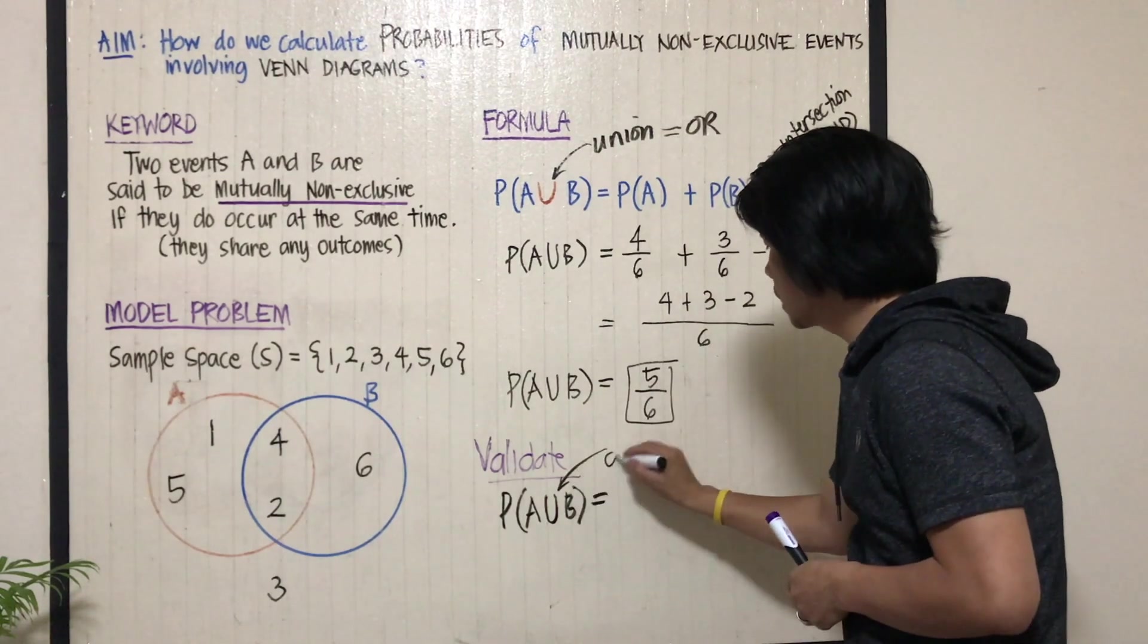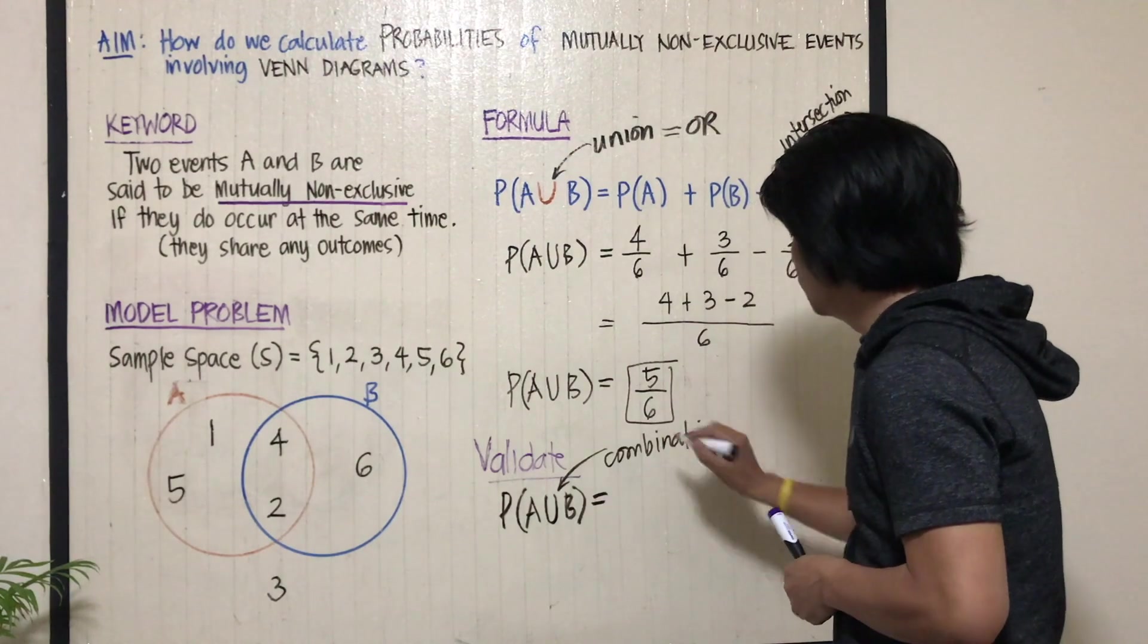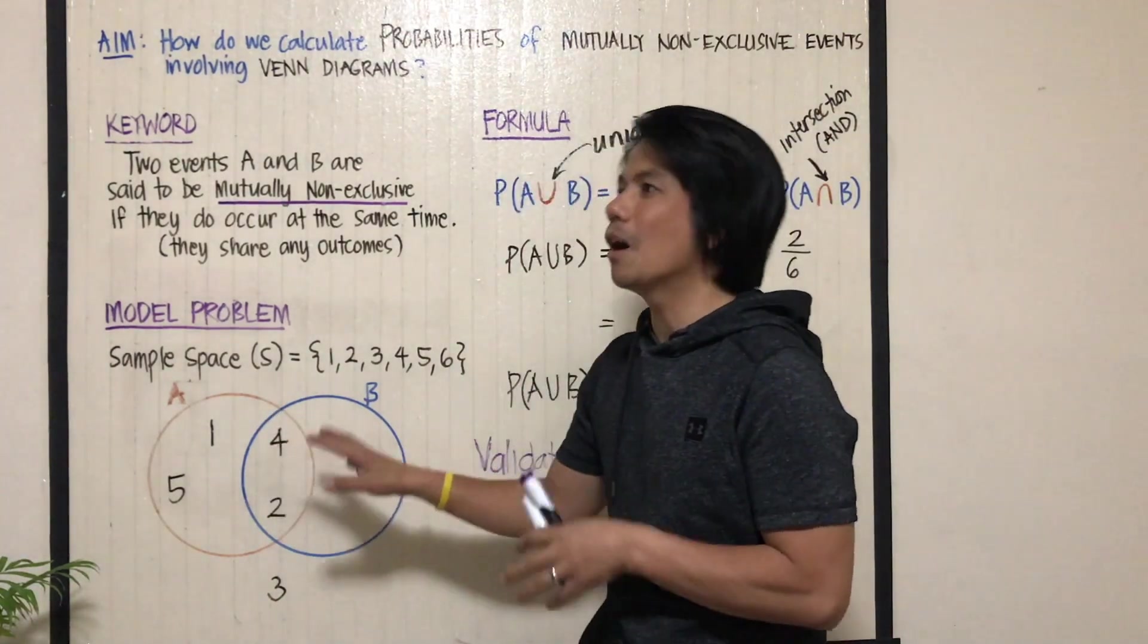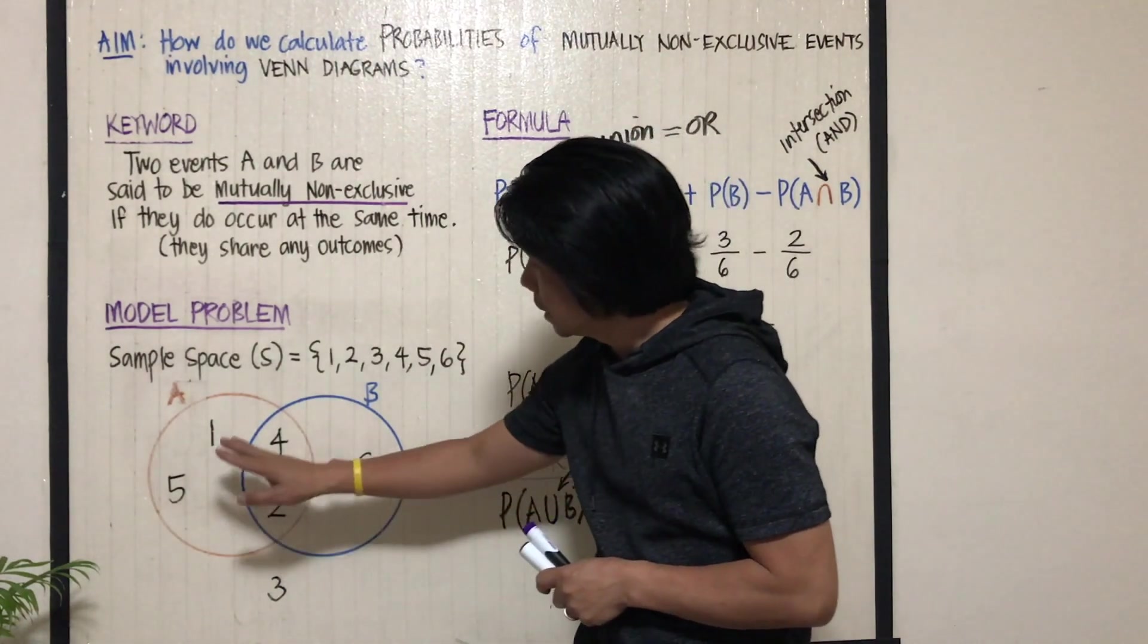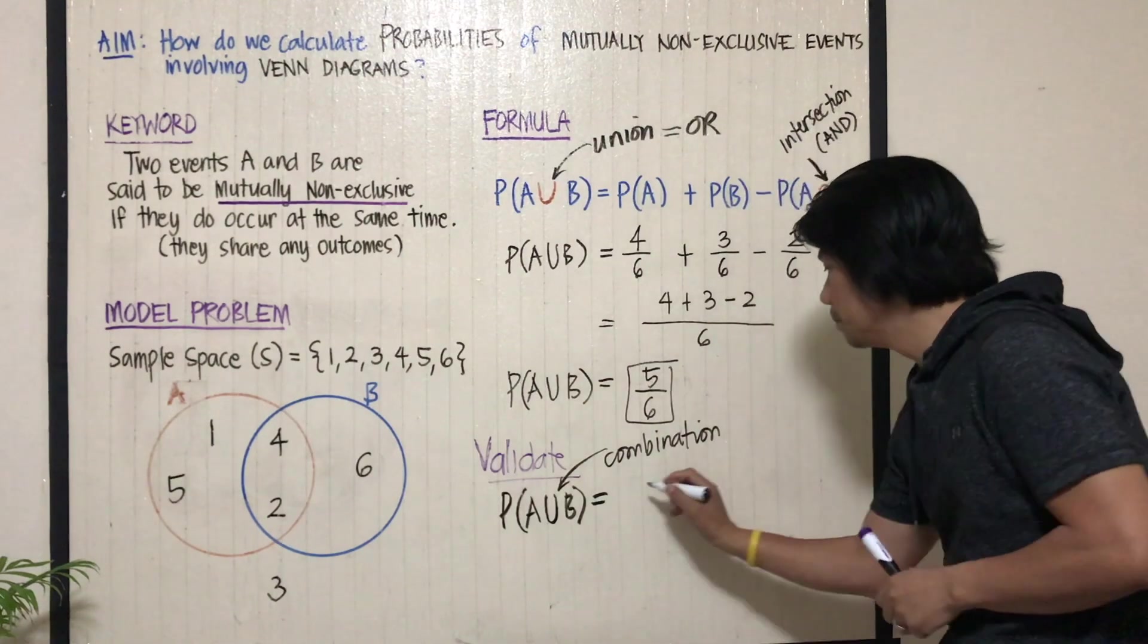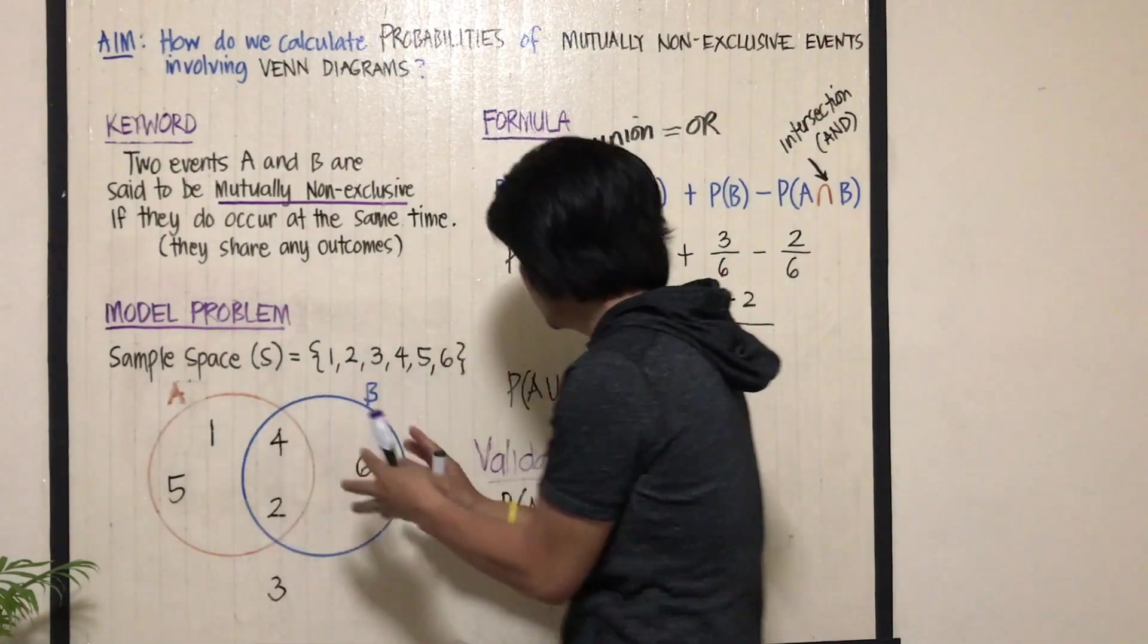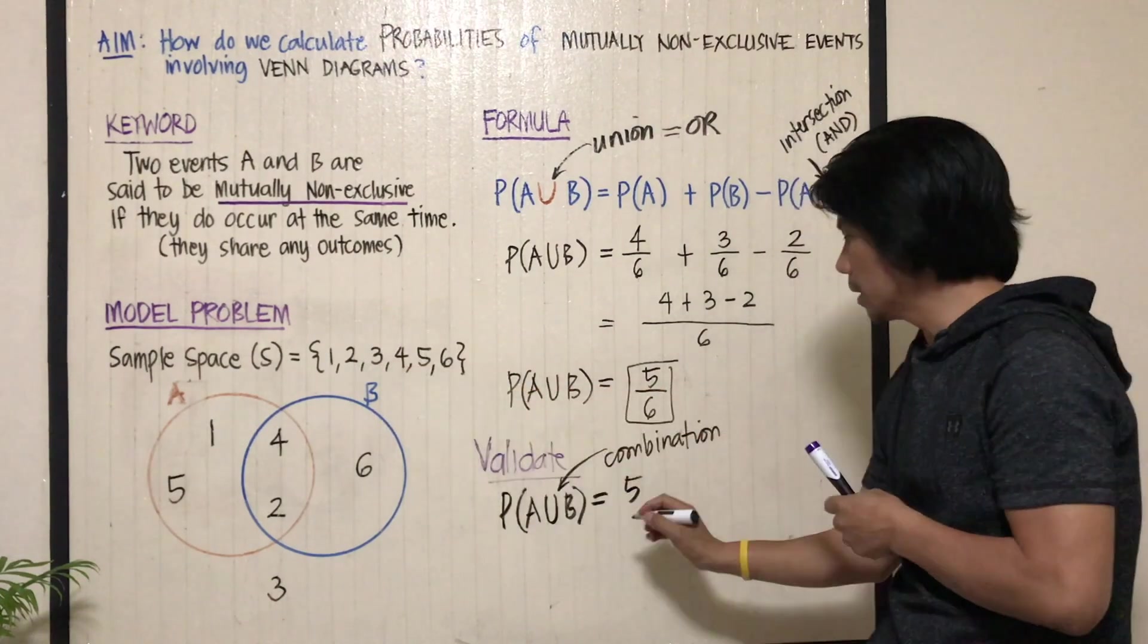Again, here, it's a combination of events A and B. If we just merely count the numbers, the number of numbers inside circles A and B, let's count: one, two, three, four, five, there are five numbers inside the combination of circles A and B, out of what? Out of the sample space, which is six.